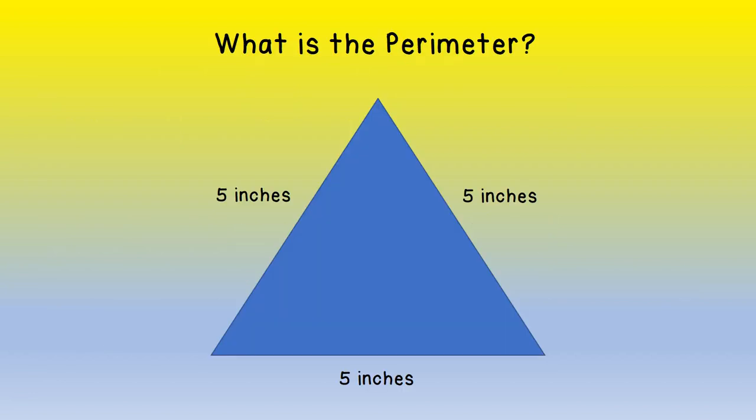Okay, so here we have a triangle and as you can see the sides are labeled and I'd like you to find the perimeter.